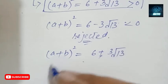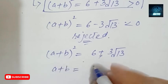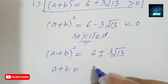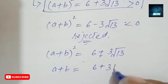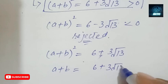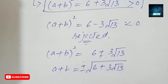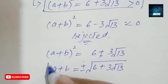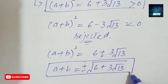So what is acceptable is (a plus b)² equals 6 plus 3√13. By taking the square root on both sides, a plus b equals ±√(6 plus 3√13). This is the final value of a plus b that we were required to find.